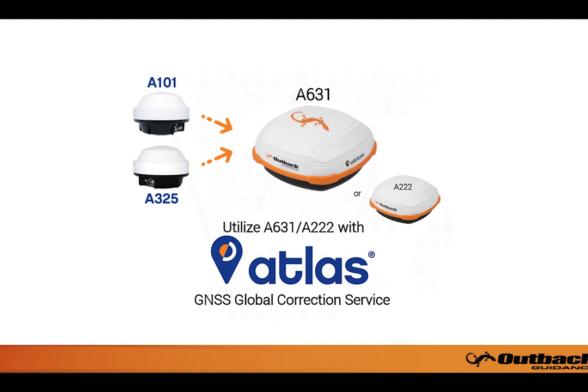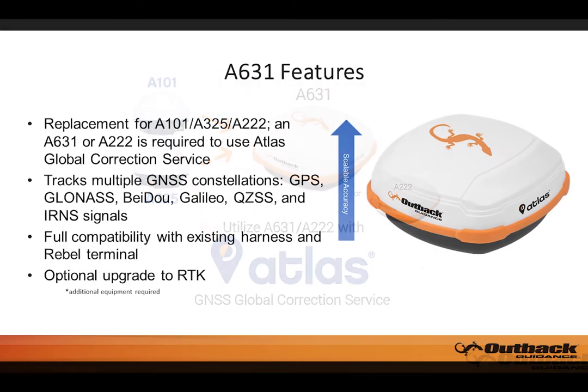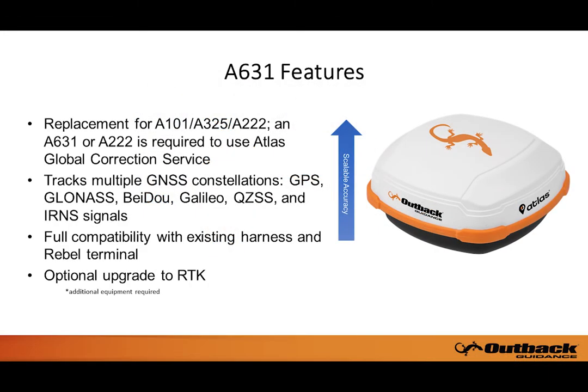So if you have either an A101 or A325 antenna installed with your Rebel, you will need to upgrade to the A631. Doing so is advantageous, as the A631 tracks multiple GNSS constellations and is able to lock on to many more satellites than previous antennas.